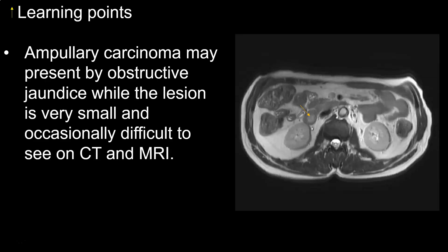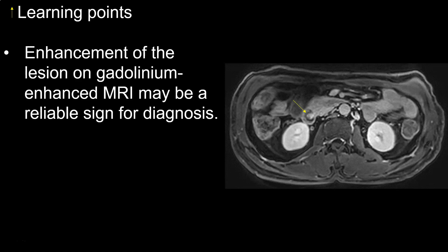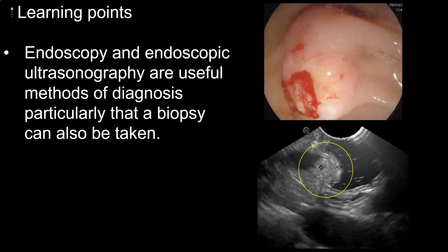The learning points are: ampullary carcinoma may present with obstructive jaundice while the lesion is very small and occasionally difficult to see on CT and MRI. This is a grace for the patient because the tumor can be removed before it spreads, but it represents a problem for imaging which may sometimes be unable to see the lesion. Enhancement of the lesion on gadolinium-enhanced MRI may help and may be a reliable sign for the diagnosis of ampullary carcinoma. Endoscopy and endoscopic ultrasonography are very useful methods for diagnosis, particularly because a biopsy can also be taken.